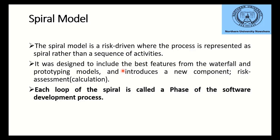The spiral model is basically a combination of the waterfall model and the incremental or prototyping model. It is a risk-driven model where the process is represented as a spiral rather than a sequence of activities. In the waterfall model the phases are linear and sequential — requirements, then design, then coding, then testing. In the spiral model the phases are arranged in a spiral wave.